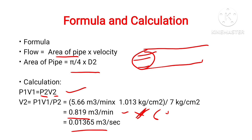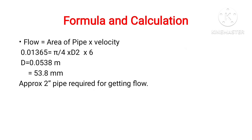Now we put all these values into the flow formula: Flow equals Area of Pipe times Velocity. Using the cross-sectional area formula and the velocity, after simplification we get D equal to 0.0538 meter. To convert this to millimeters, we multiply by 1000, giving us 53.8 mm line size. This is the diameter of the pipe, so approximately a 2-inch pipe is required to achieve the required flow.